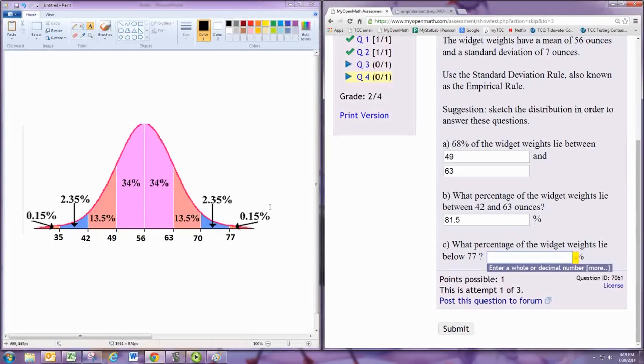So we'll take the hundred percent and we'll just subtract the part we don't want, and that's the 0.15 percent. That leaves us with 99.85 percent - almost everything.